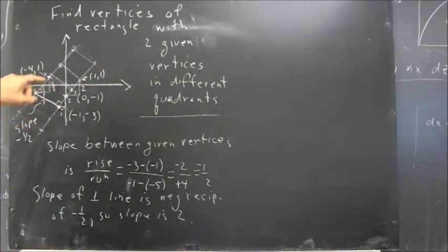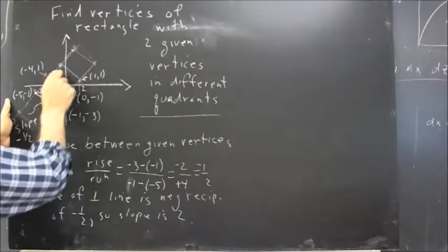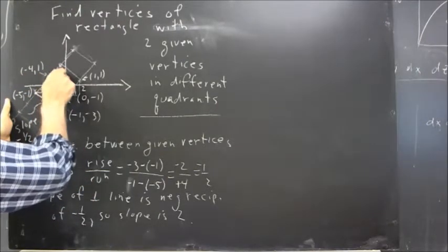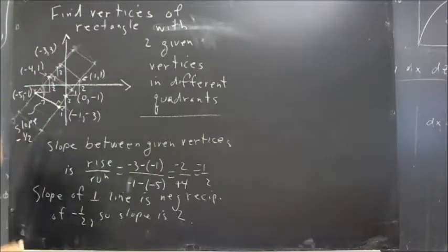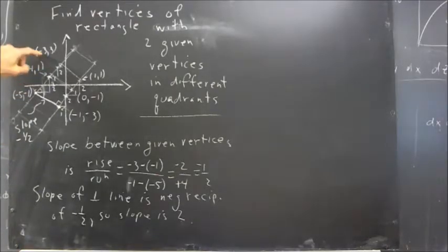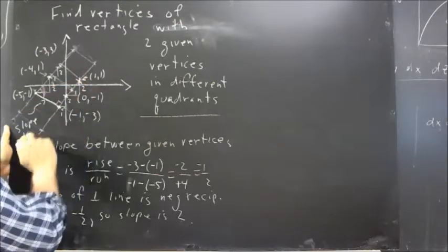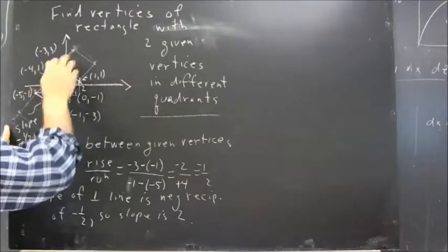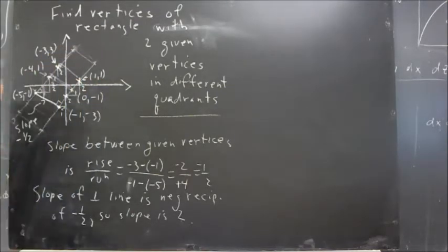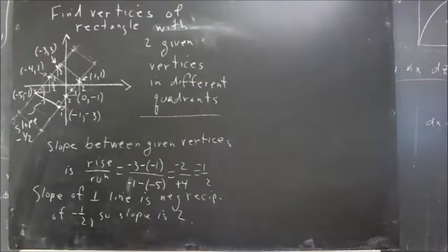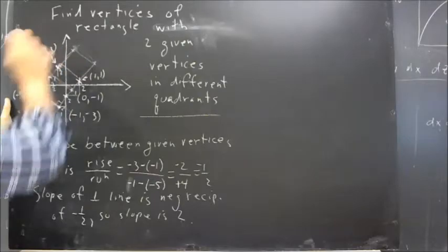Moving over one and up two from zero, negative one puts us at one, one. And if we do the same from negative four, one — move over one and up two — that puts us at negative three, three. At the points negative three, three and one, one: these are both points on their respective perpendicular lines, they're in different quadrants, and their quadrants are different from the quadrant of the original vertices. So we now have vertices of the rectangle satisfying the given conditions.